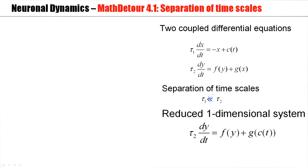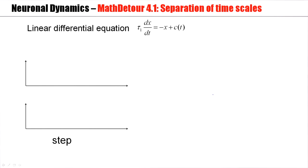The assumption is that we have two coupled differential equations, and the time scales of these differential equations are tau 1 and tau 2, respectively. And the assumption is that one of the two variables is much faster, or tau 1 is much faster than tau 2. So, let's look at an example.